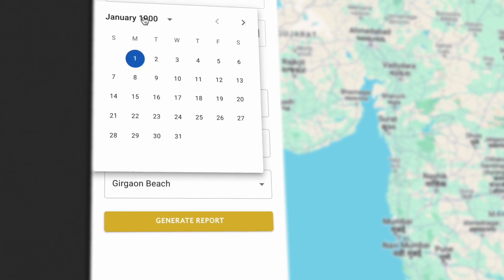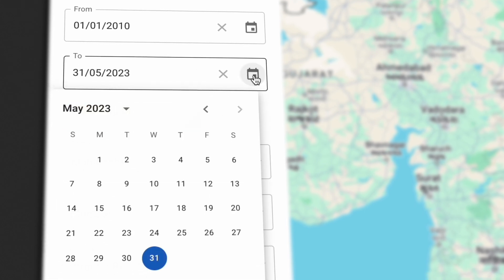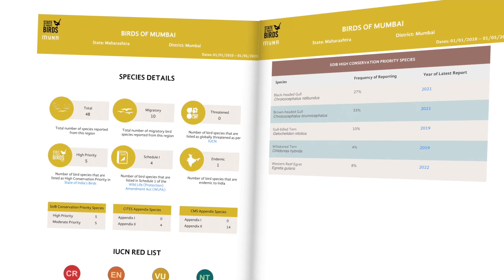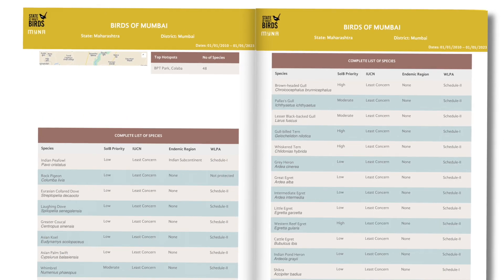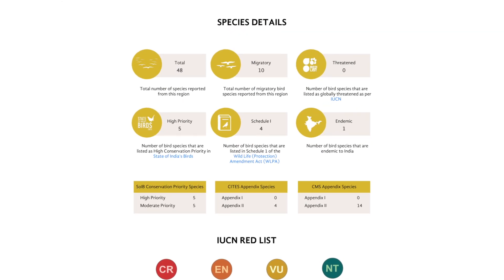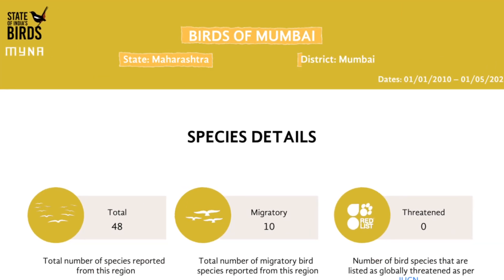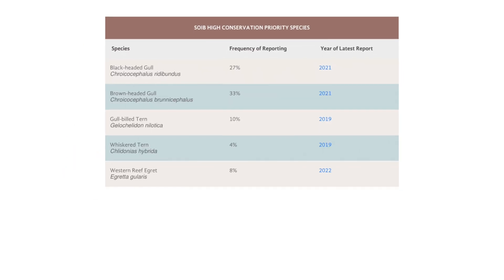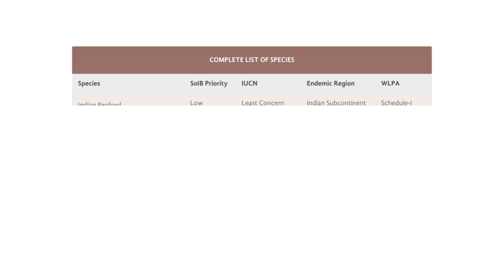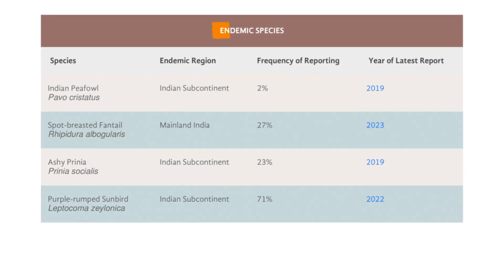You can also filter by date, in case you need data from recent years alone. Once you have selected your area and the timeline, your report is just one click away. Maina draws from millions of observations in the underlying eBird database, contributed by thousands of bird watchers from around the country and carefully curated by scientists at the State of India's Birds Partnership. The report is a neat visual summary of the bird species occurring in the area, highlighting species of conservation concern and providing information on which species are endemic to your region.